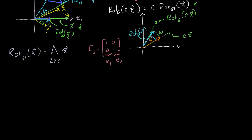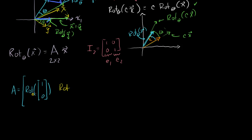So matrix A is going to be: the first column is our rotation transformation performed on the vector (1, 0), and our second column is going to be the rotation transformation through theta of the second basis vector (0, 1). This is what our A is going to look like. Now we need to figure out what these actually are in numbers.